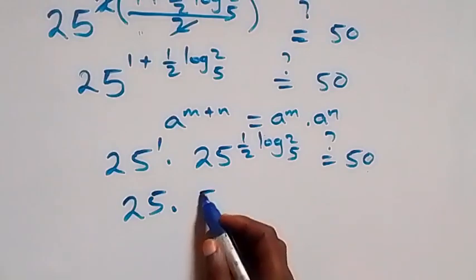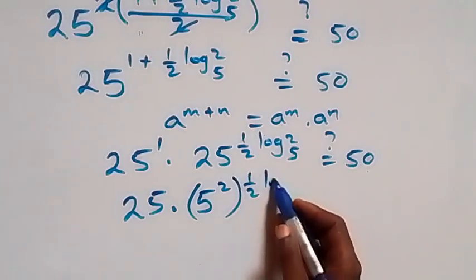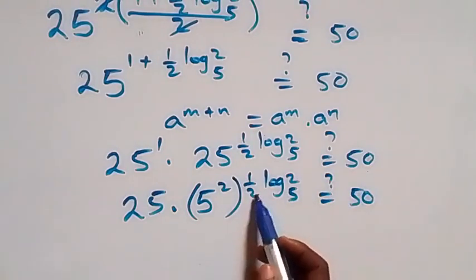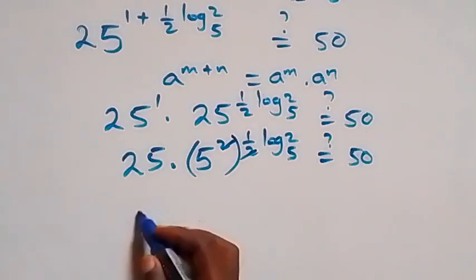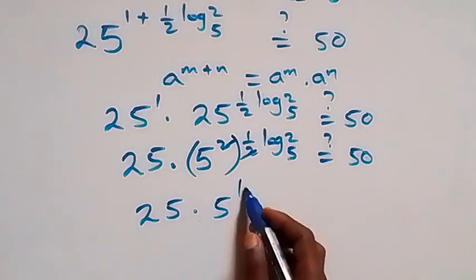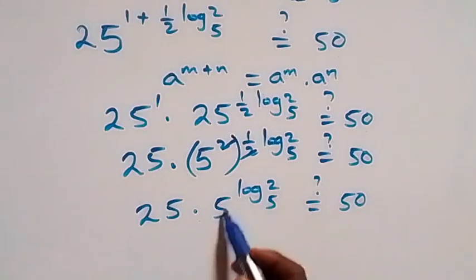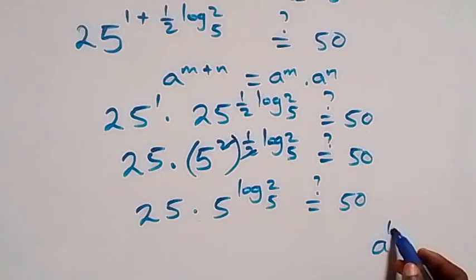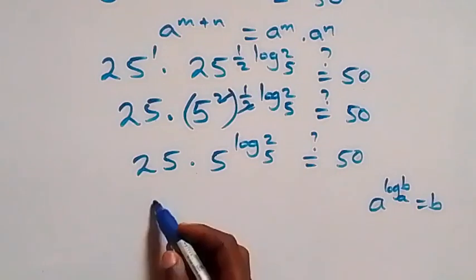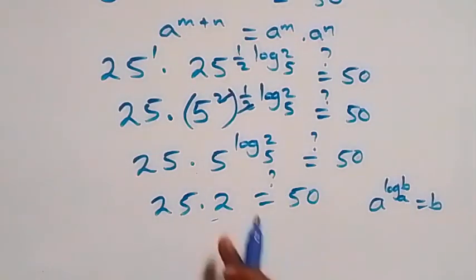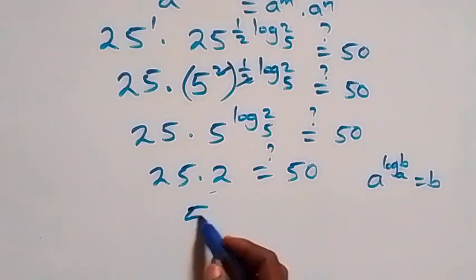What we have becomes 25 raised to power 1 times 25 raised to power half log₅2 equals to 50. We can write 25 as 5 squared, so the power multiplies: the 2 and the half cancel, leaving 25 times 5 raised to power log₅2. Using the identity a raised to power log_a(b) equals b, we get 25 times 2 equals 50, which is true.